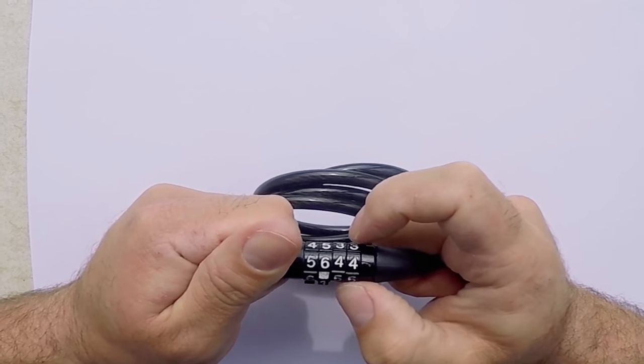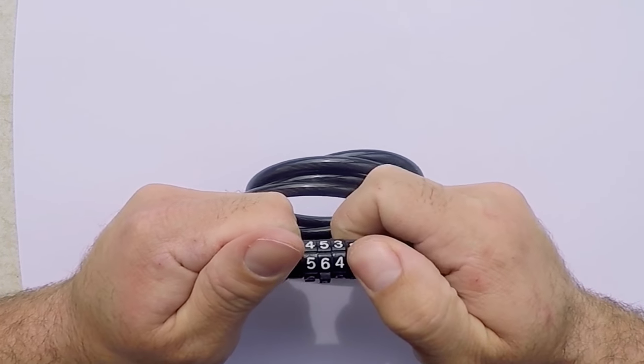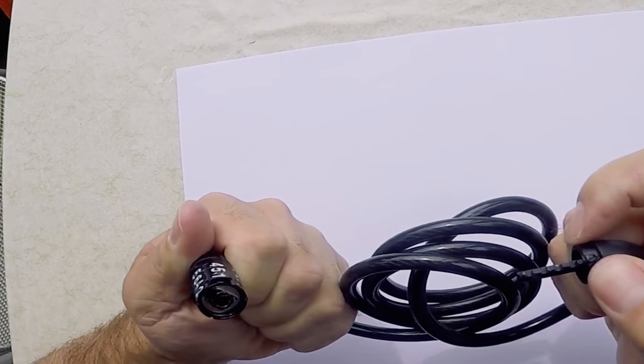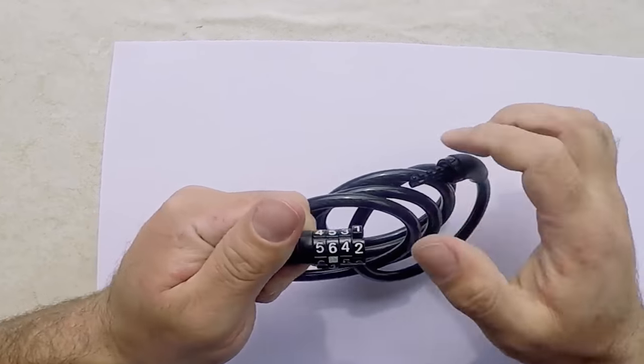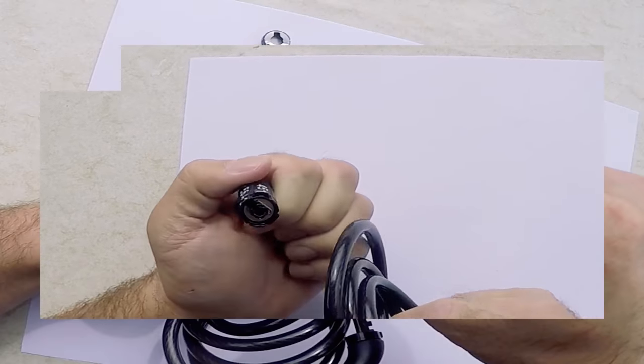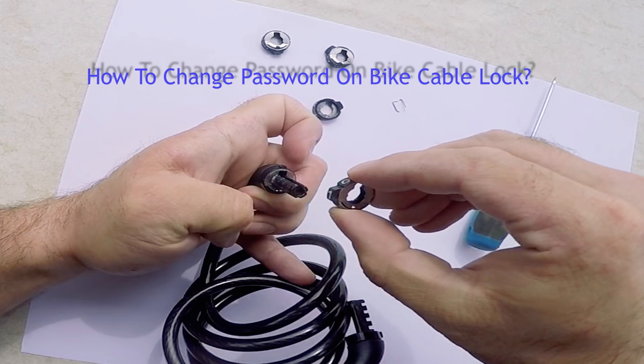Finally, when you hit all the numbers you opened your code. And that's it. After you learn how to unlock your bike lock, you can learn how to change your lock combination.